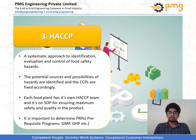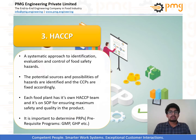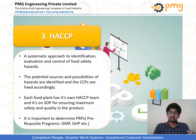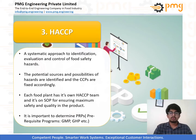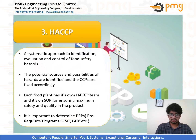HACCP is used to control foreign materials or hazards and the risk caused by these hazards in the final food product. It can be used at all stages of a food chain — from raw material reception, to processing, to packaging and distribution. Industries that follow HACCP will have an HACCP team with team leaders and team members.